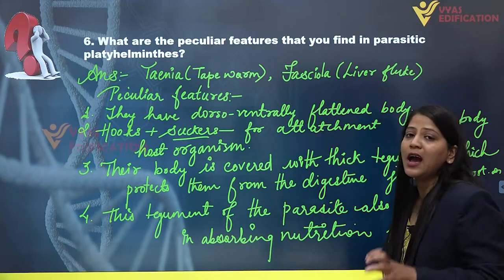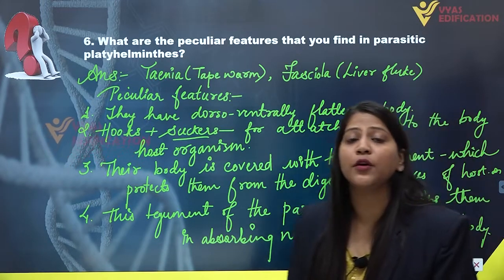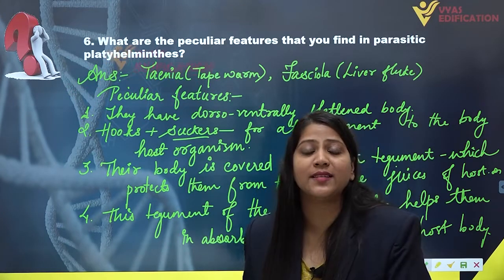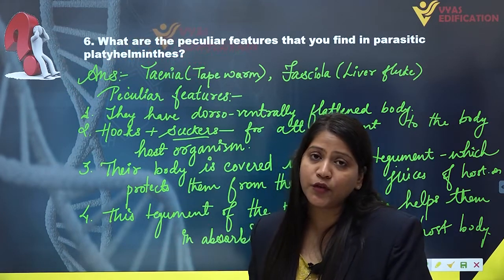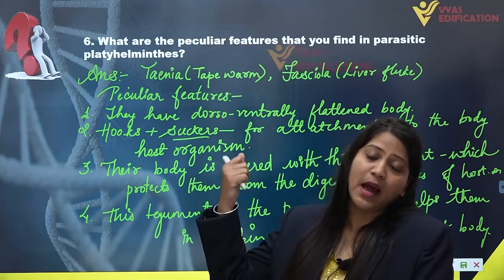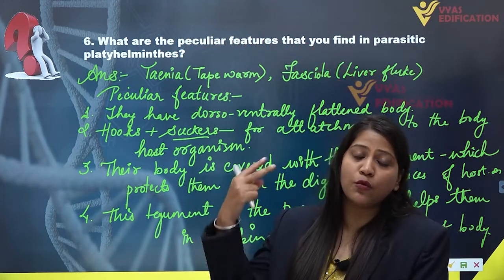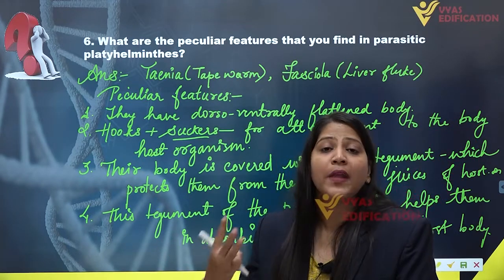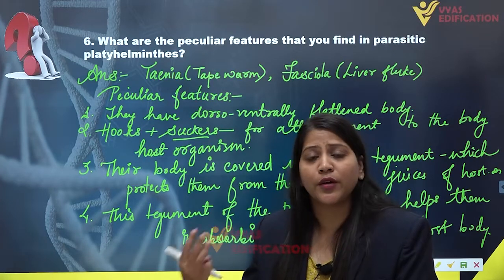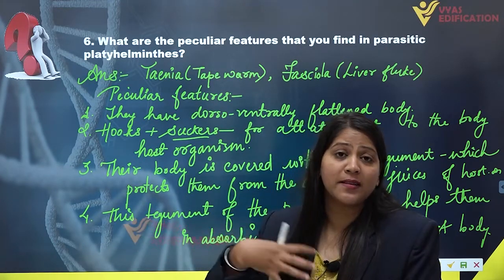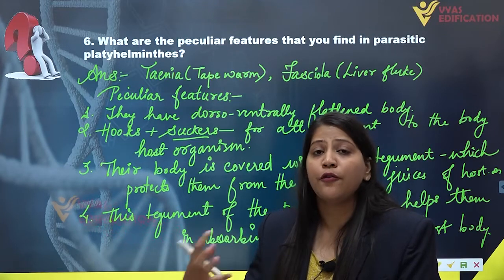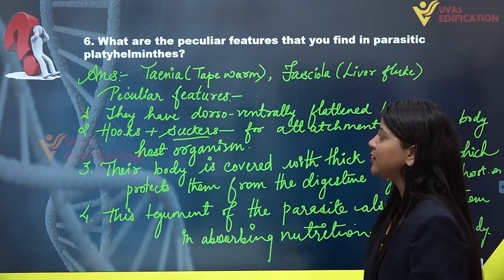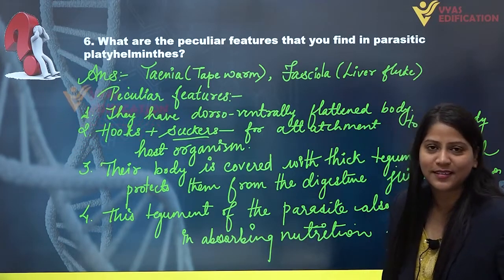I hope you are clear with the answer of question number six. Taenia's common name is tapeworm and Fasciola's common name is liver fluke — these two are the parasitic platyhelminthes. Their peculiar features are: dorso-ventrally flattened body, hooks and suckers for attachment, and a thick tegument that protects from digestive enzymes and helps in absorption of nutrients.